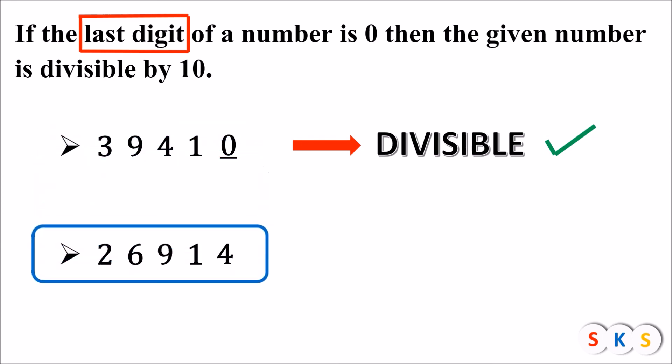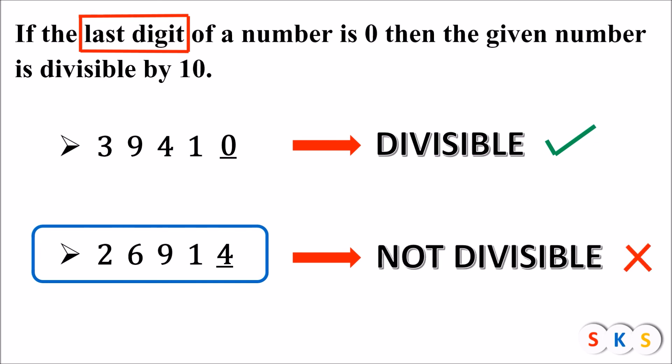Is this number divisible by 10? Let's see the last digit of this number. It is 4. If the last digit of any number is other than 0, then the number is not divisible by 10.